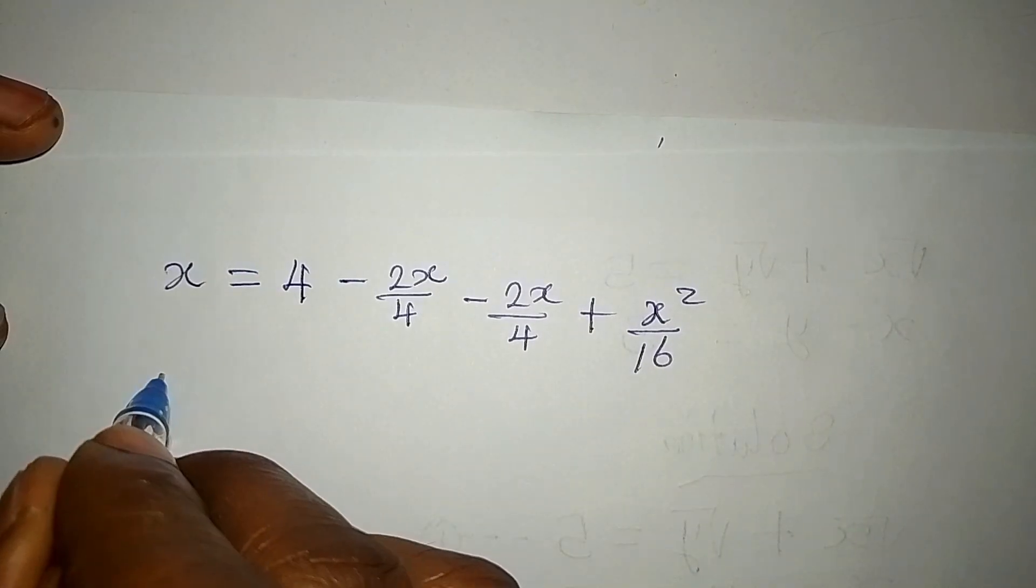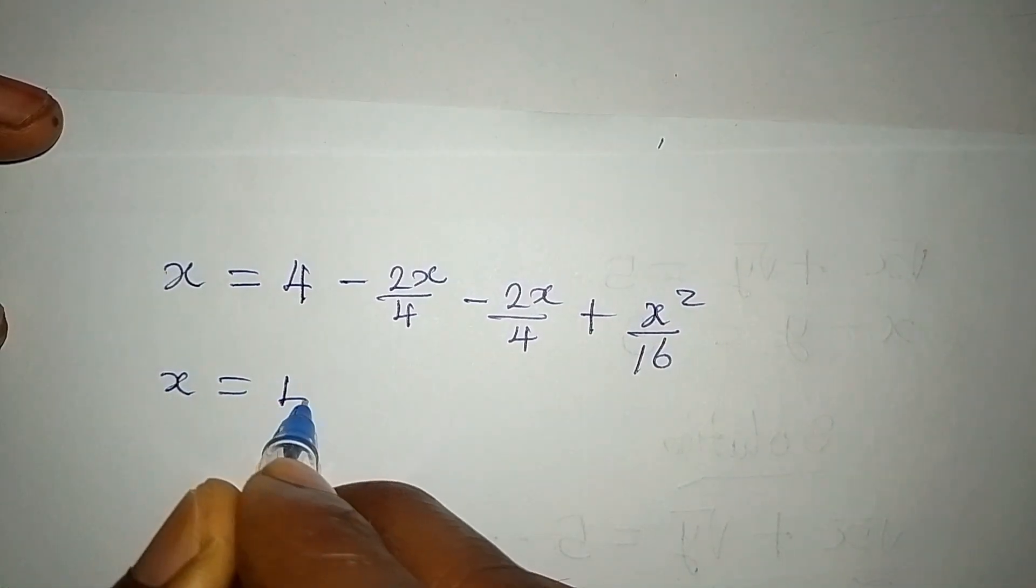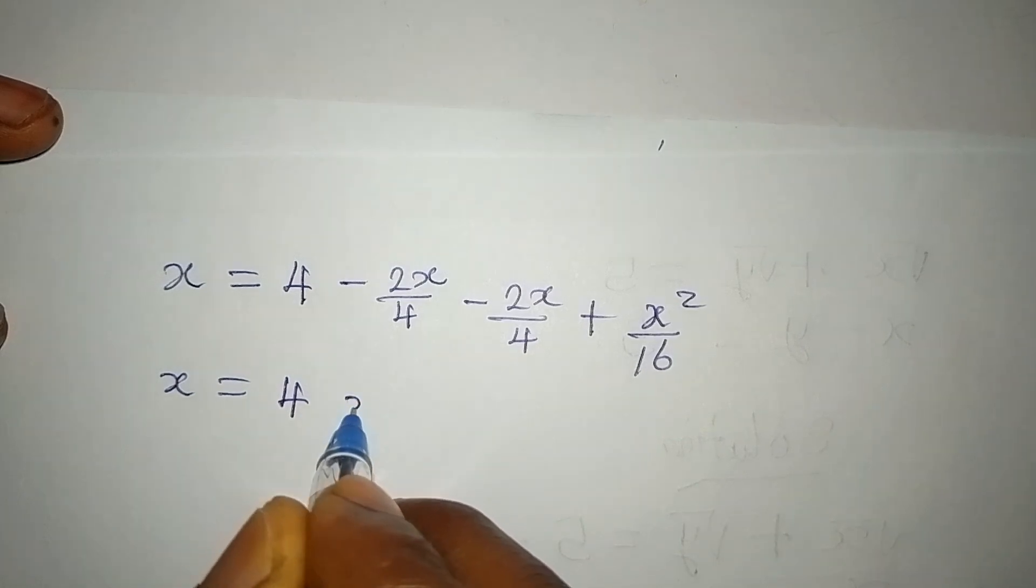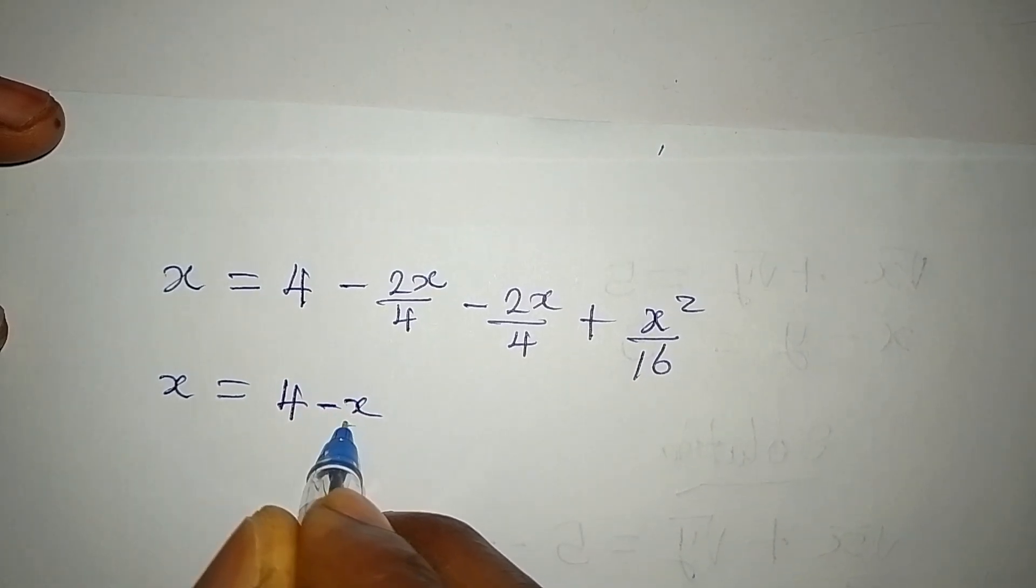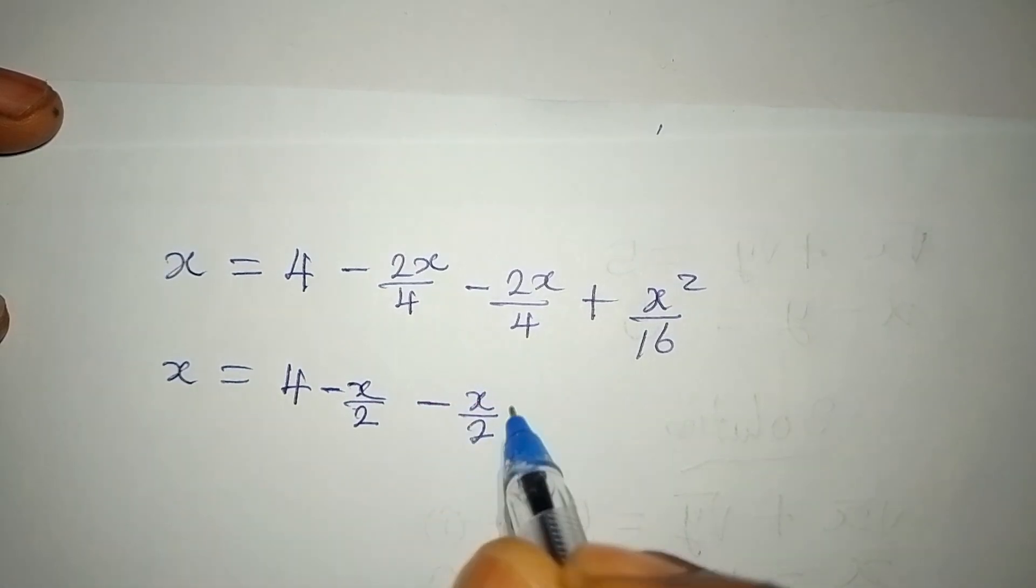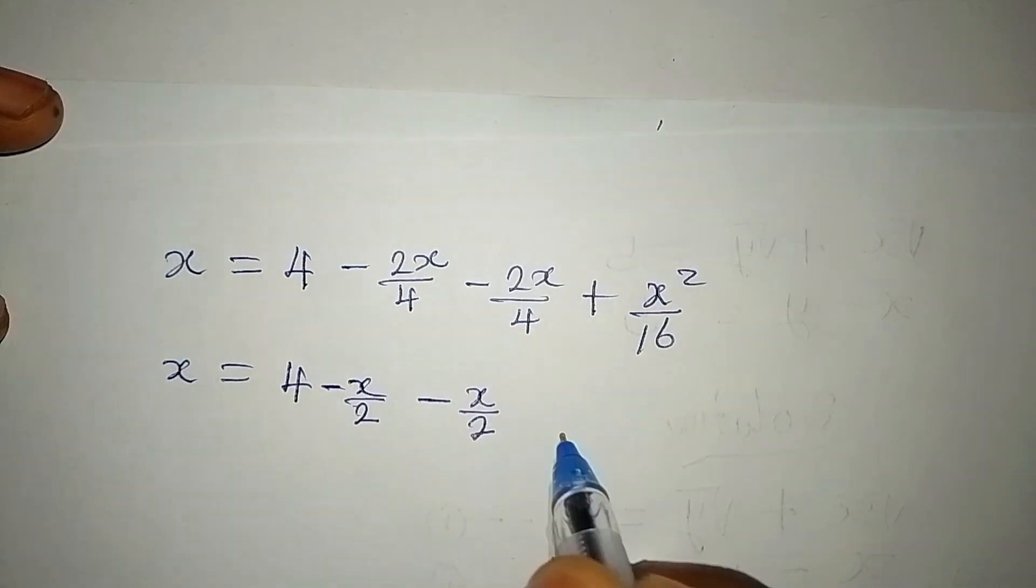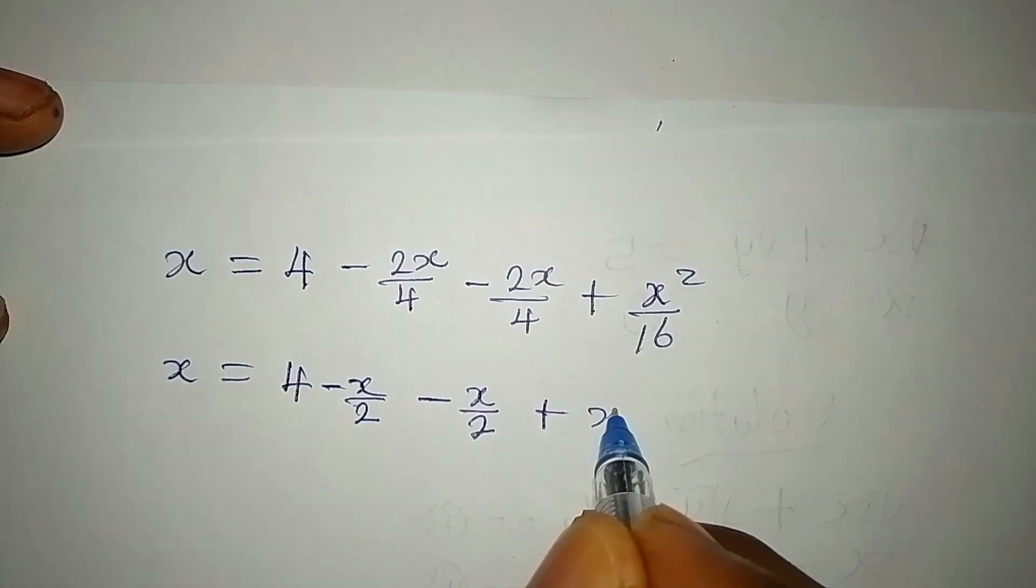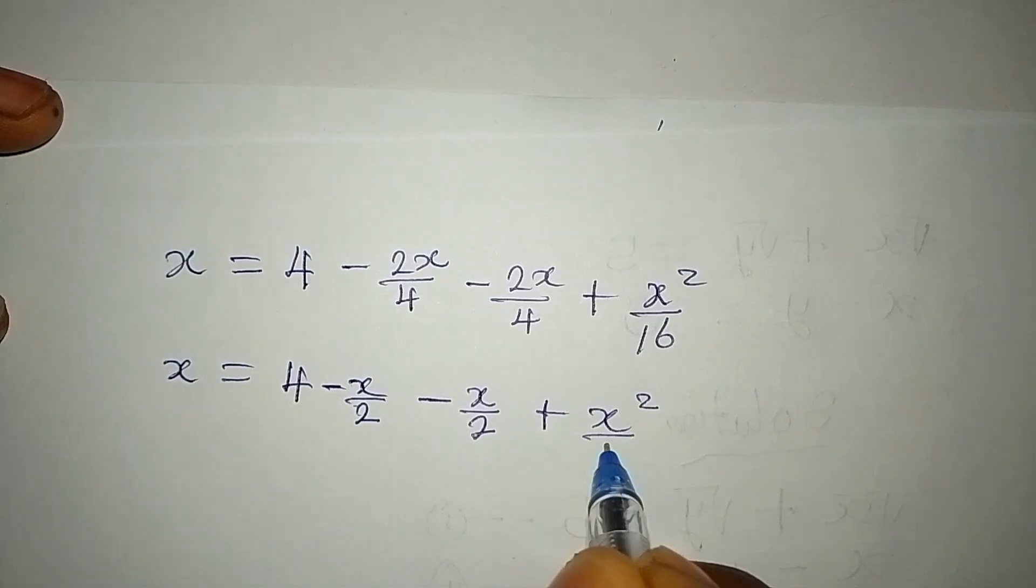So x is equal to 4 minus x/2, minus x/2, because 2 can go into 4 two times, then plus x²/16.